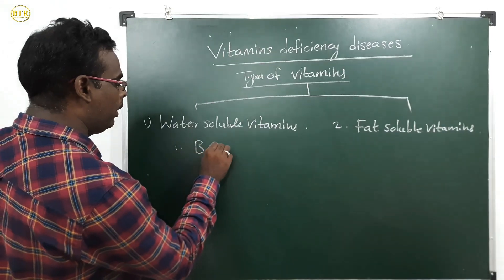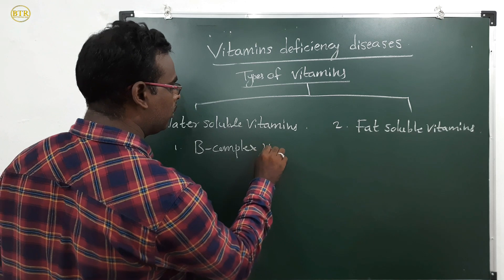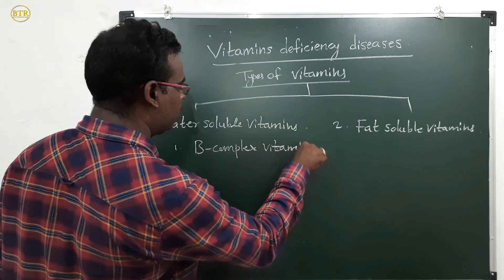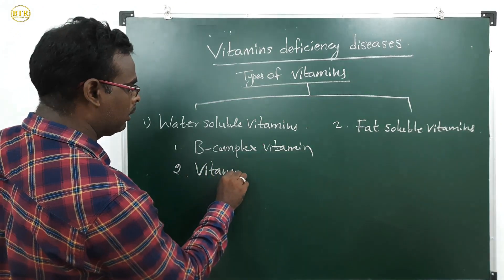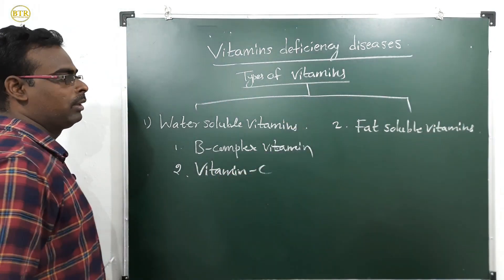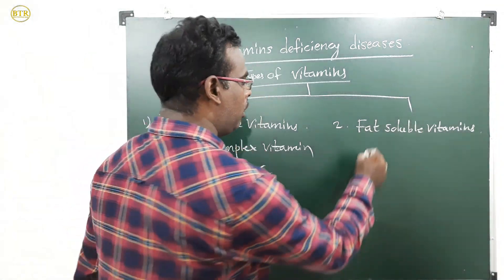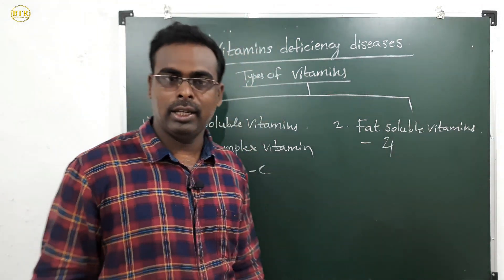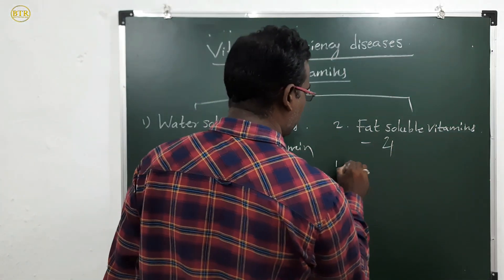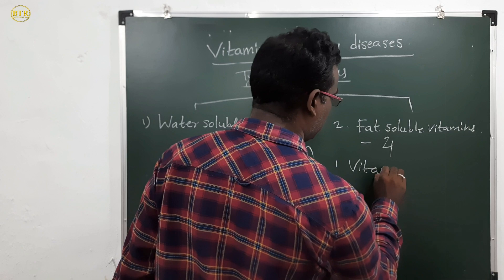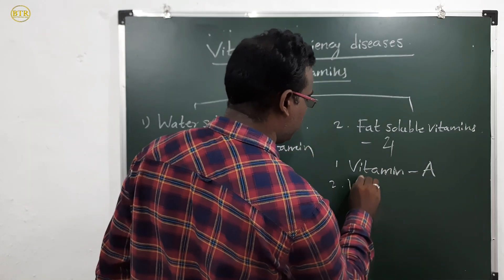The water-soluble vitamins are two: B complex vitamins and vitamin C. The fat-soluble vitamins are four: vitamin A, vitamin D, vitamin E, and vitamin K.